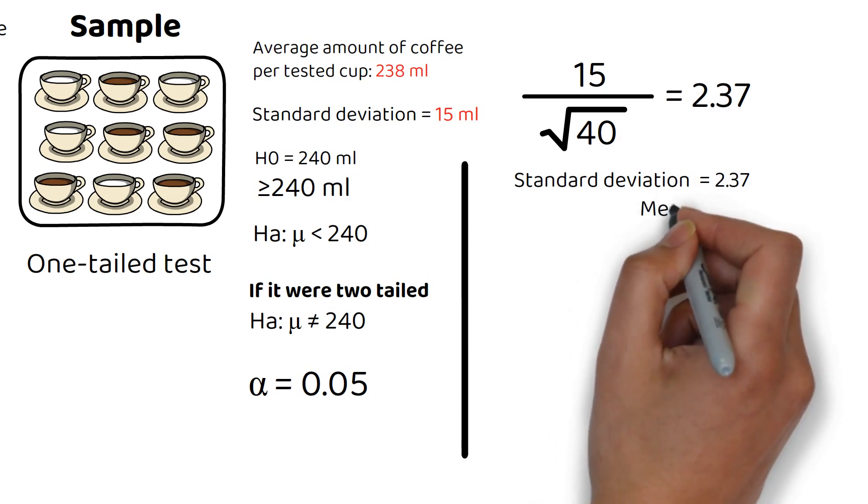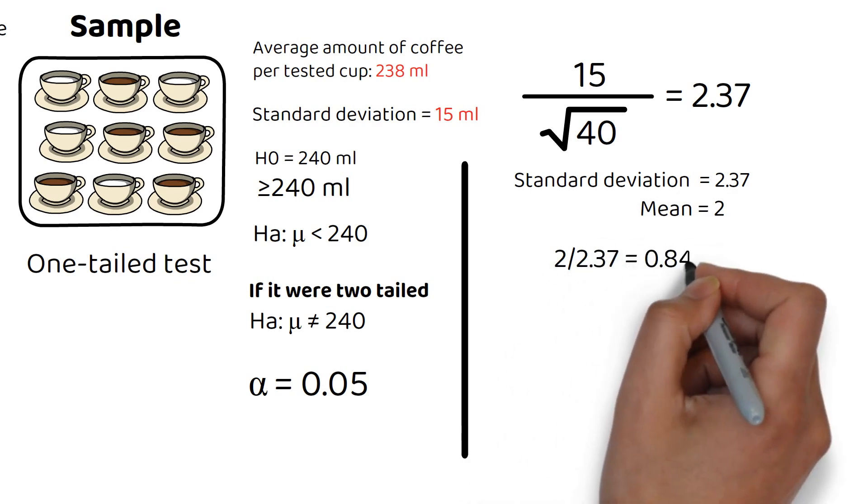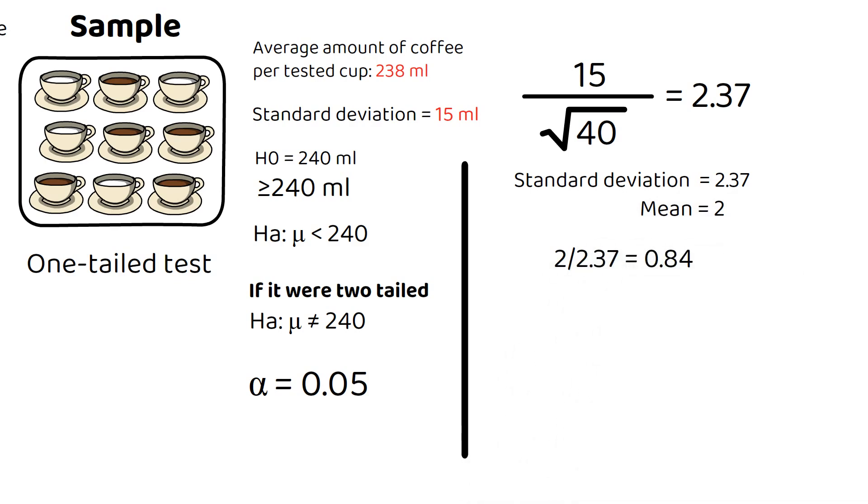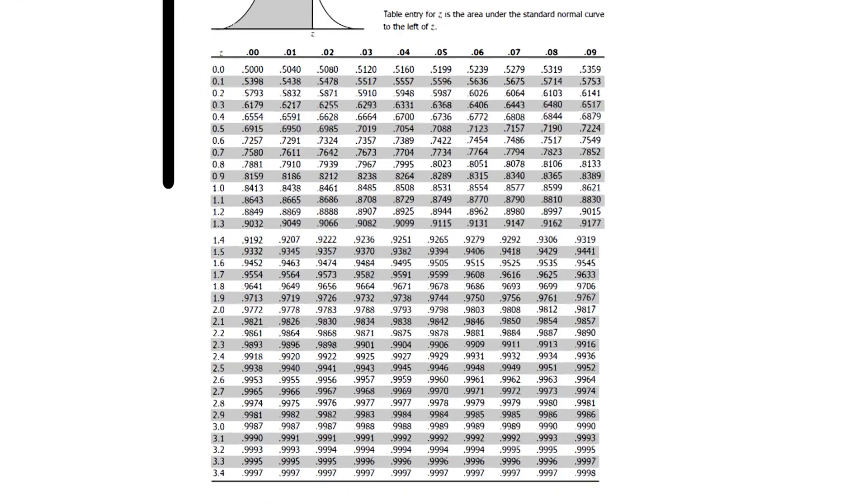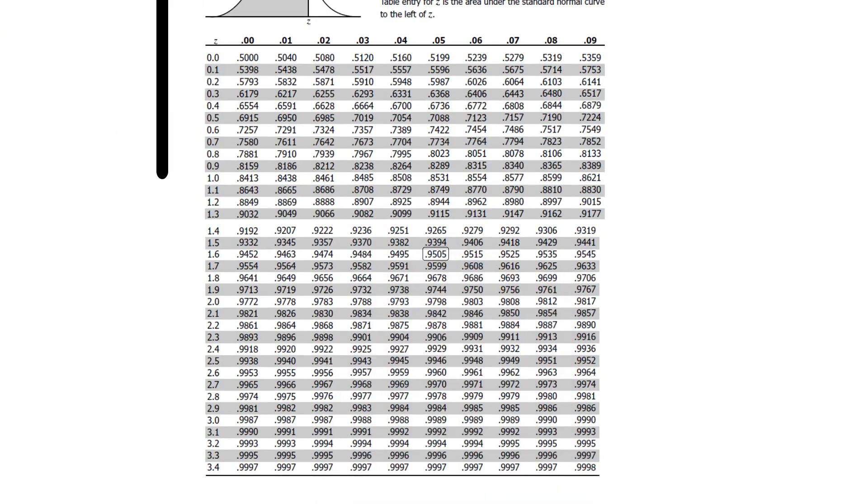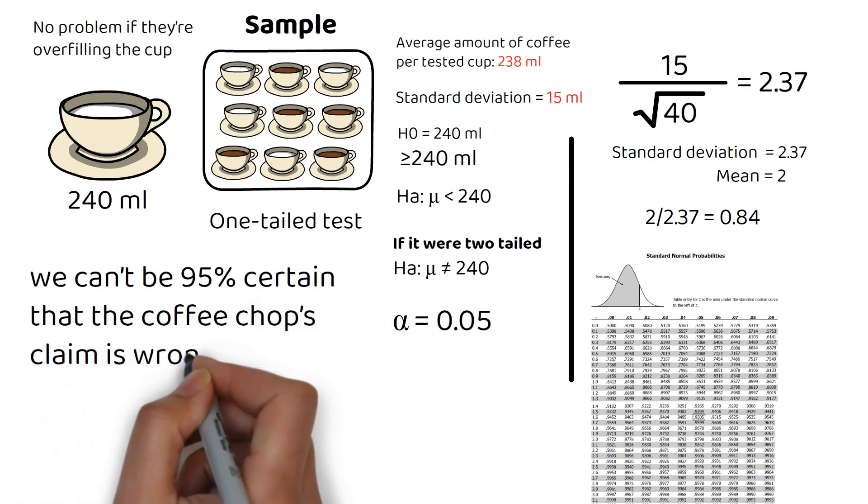In our case, the measured mean was 2. 2 divided by 2.37 is about 0.84, which means our measured average of 238 milliliters is about 0.84 standard deviations below the mean. Looking at the Z-table, to achieve 95% certainty on a one-tailed test, you'd have to be 1.65 standard deviations away from the mean. Since our mean of 238 milliliters is only 0.84 standard deviations below the claimed volume of 240 milliliters, we can't be 95% certain that the coffee shop's claim is wrong.